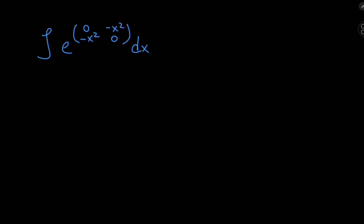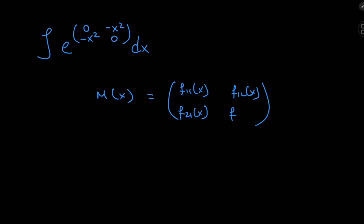First up, how do you even integrate a matrix? Well, if I have a matrix function m of x, then that means the entries of the matrix are functions of x. For example, in the 2x2 case, I can represent this as f₁₁(x), f₁₂(x), f₂₁(x), and f₂₂(x). And integrating this thing is no big deal whatsoever — all you have to do is integrate the individual entries with respect to x.